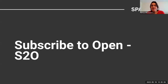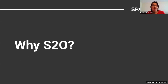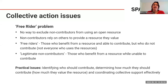Subscribe to Open is a good name — very descriptive — but it's long, so everybody uses S2O as shorthand. Why S2O? What is the problem that S2O is trying to resolve that other models couldn't? Some of the problems are related to collective action issues. The main one is the free rider problem: there is no way to exclude non-contributors from using an open resource, and they rely on others to provide something they value.